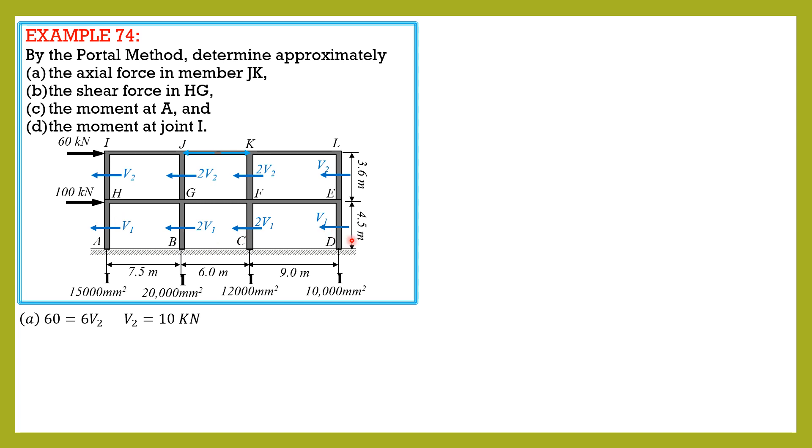But before that, we can solve for the axial force in member JK. Imagine that this is isolated as free body diagram of this portion. The vertical component of the forces at this midpoints, which are imagined hinges, interior hinges, are not important because our equation is just summation of forces horizontal. So from the figure, 60 equals V sub 2 plus 2V sub 2 plus FGK. So 60 equals V sub 2, 10, plus 2V2 which is 2 times 10, plus FGK. From there we can solve FGK equals 30 kilonewtons and it is compression.